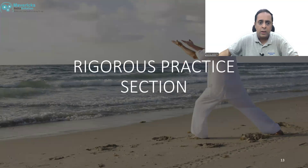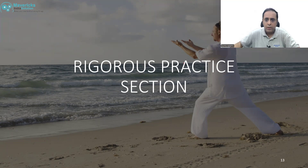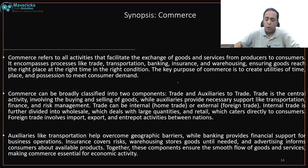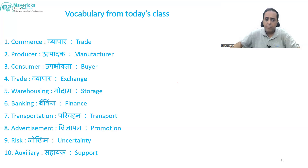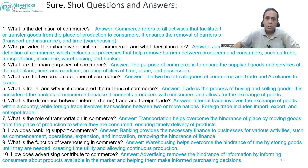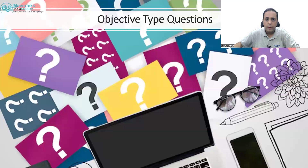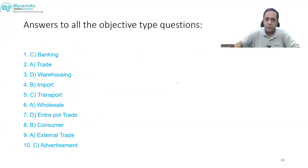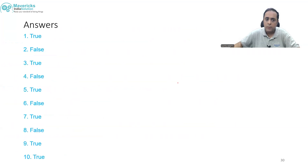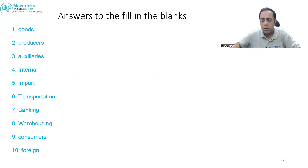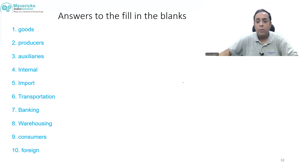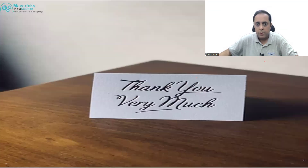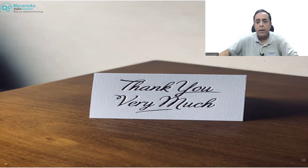Don't forget to take up the rigorous practice section. It includes a complete synopsis of commerce, vocabulary from today's class in English and Hindi, short questions and answers, 10 objective type questions with answers, true and false statements, and fill in the blanks — all with their answers. This is the USP of Mavericks India Solution. Never forget and never give up. We are there to help you with your curriculum to the max. See you next time. God bless you all. Keep studying, keep evolving, and keep becoming strong.